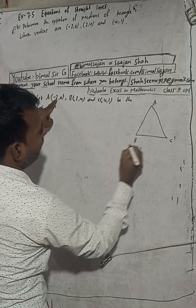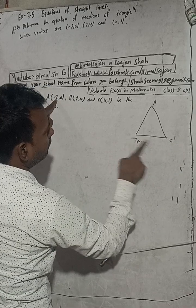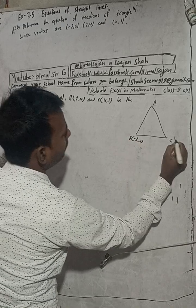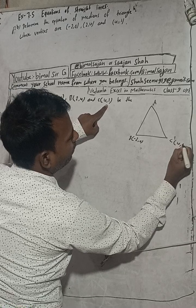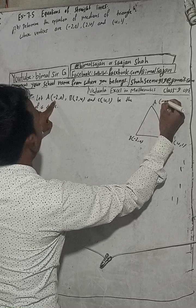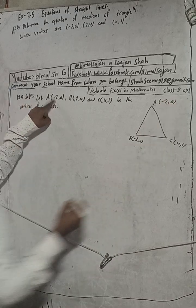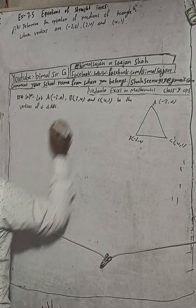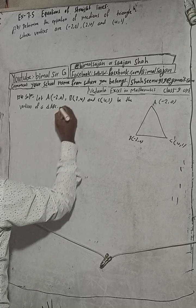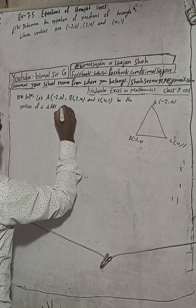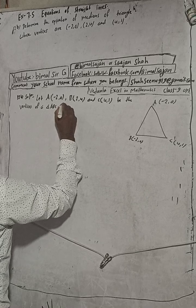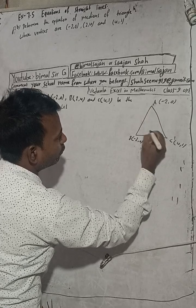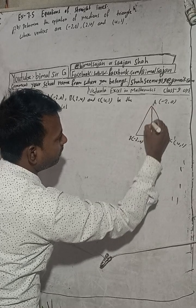Here is our triangle ABC. The vertices are B(-2, 0), C(4, 1), and A(-2, 0). The midpoint of BC is D, the midpoint of AC is E, and the midpoint of AB is F. Joining from a vertex to the midpoint of the opposite side gives the median.